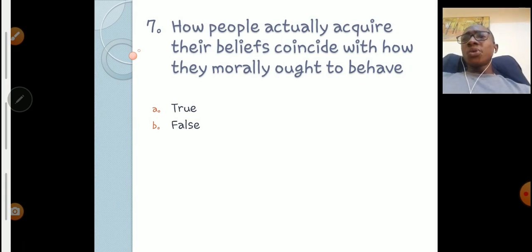Question number seven: How people actually acquire their beliefs coincide with how they morally ought to behave - true or false? Do you agree or disagree? Yes, you are right, it's a false statement. It doesn't coincide because the things we are taught, or the beliefs we have right now, is that what we do? No. So it doesn't coincide. Sometimes the way we behave is inversely related to the things we believe in or we are taught. So it's a false statement. That makes B the answer. Question number eight.